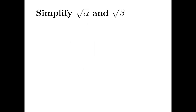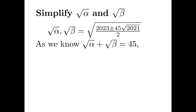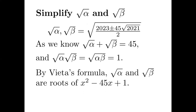Problem number two: simply find the square root of alpha and the square root of beta — these are nested square roots. We know the square root of alpha plus the square root of beta equals 45 (this is just a1), and the square root of alpha times the square root of beta equals 1. Therefore, by Vieta's formula, the square root of alpha and the square root of beta are roots of the quadratic polynomial x squared minus 45x plus 1, giving the simplified expression (45 plus or minus the square root of 2021) divided by 2.